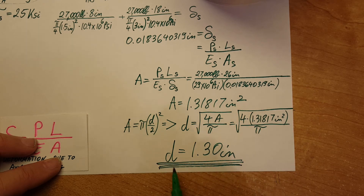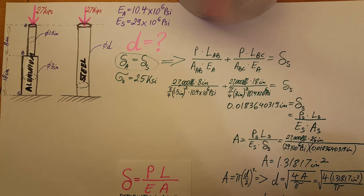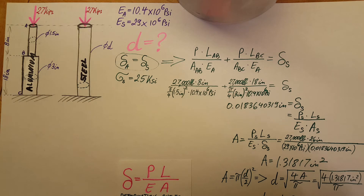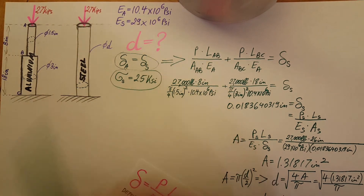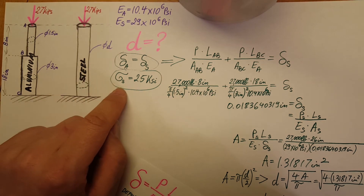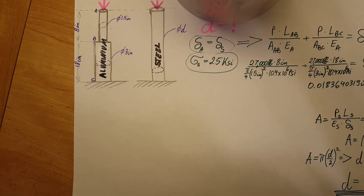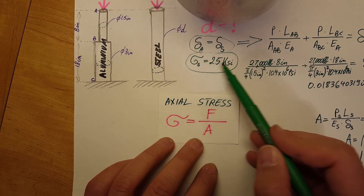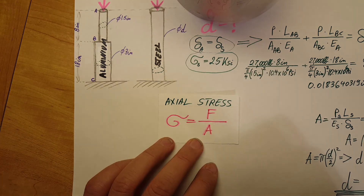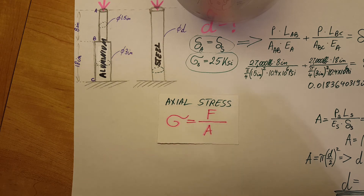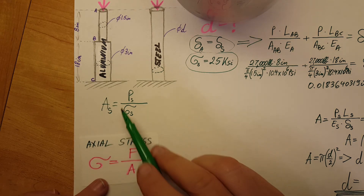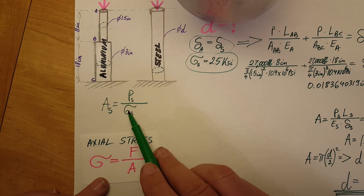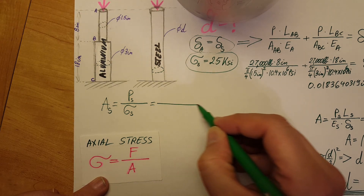That's the first diameter — it satisfies the condition that the steel rod deforms no more than the aluminum rod did. Now for the second condition: the steel rod cannot have an axial stress exceeding 25 ksi. Using the axial stress formula, stress equals force over area. The area of the steel equals the force divided by the allowable stress.